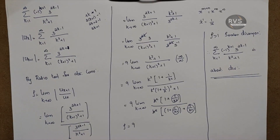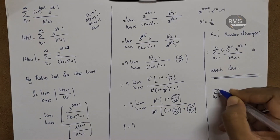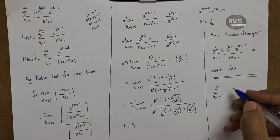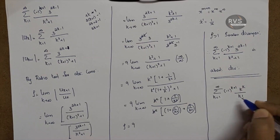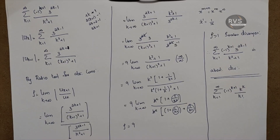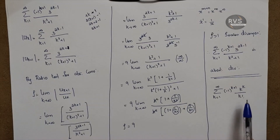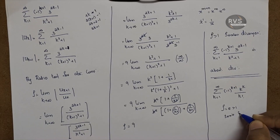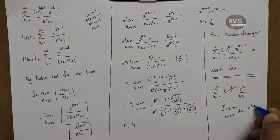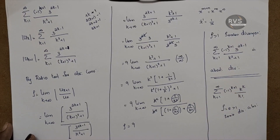I learned how to check absolute convergence. Consider summation k equals 1 to infinity of minus 1 raised to k plus 1 times k raised to k over k factorial. Using the ratio test, rho equals the limit of 1 plus 1 over k raised to k, which equals e. Since e is greater than 1, the series diverges absolutely.